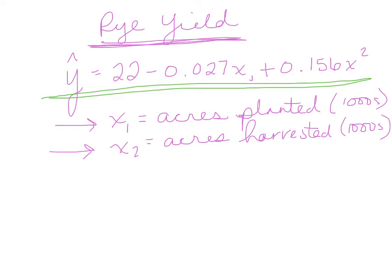It's very similar to what you just did with single linear regression. You just have to pay attention — you have x with a little 1 by it and x with a little 2 by it. You're going to plug in your x1 value where you see x1 in the equation, and your x2 value where you see x2. Note: that subscript should be a 2 below, not an exponent above.